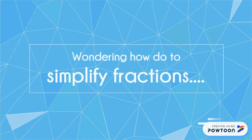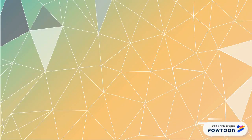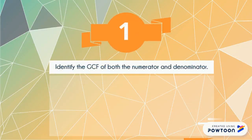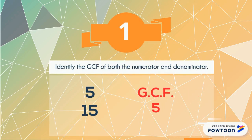Wondering how to simplify fractions? Well, pay close attention. Step 1: Identify the GCF, or greatest common factor, of both the numerator and the denominator. In this case, the greatest common factor of 5 and 15 is the number 5.